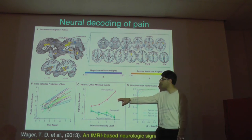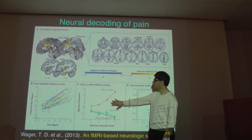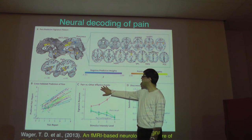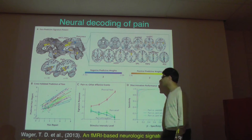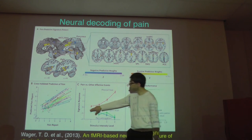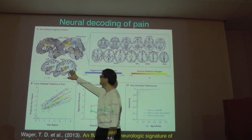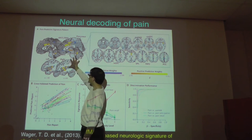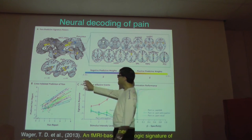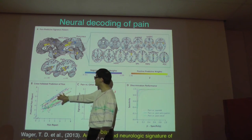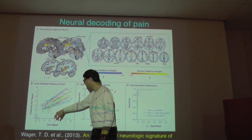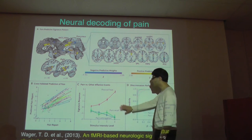Now this is interesting — it relates to the question about specificity. Pain versus other affective, meaning emotional, events. This red line is what they call their 'pain signature': the set of neural activations that, when fed into the regression, outputs how much pain the person is in. You take the activation of those voxels, put it into the regression, and get a high or low pain signature.